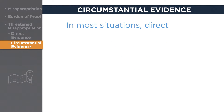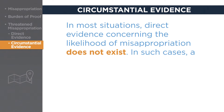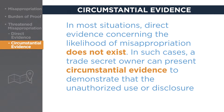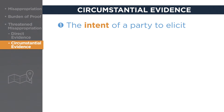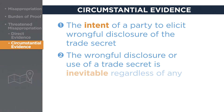However, in most situations, direct evidence concerning the likelihood of misappropriation does not exist. In such cases, a trade secret owner can present circumstantial evidence to demonstrate that the unauthorized use or disclosure of trade secrets is eminently threatened. There are two types of circumstantial evidence: 1. Evidence demonstrating the intent of a party to elicit the wrongful disclosure of the trade secret. 2. Evidence demonstrating that the wrongful disclosure or use of a trade secret is inevitable regardless of any party's intentions.